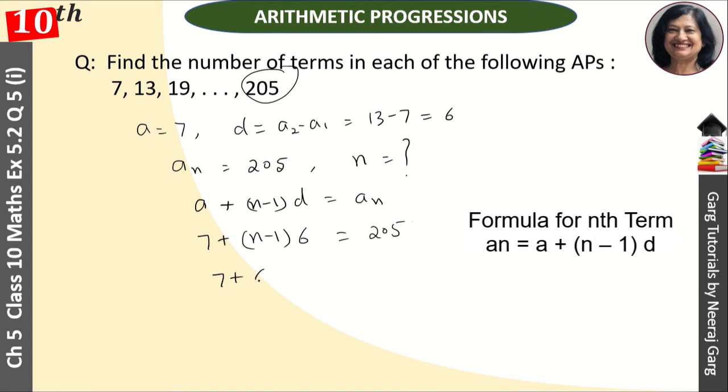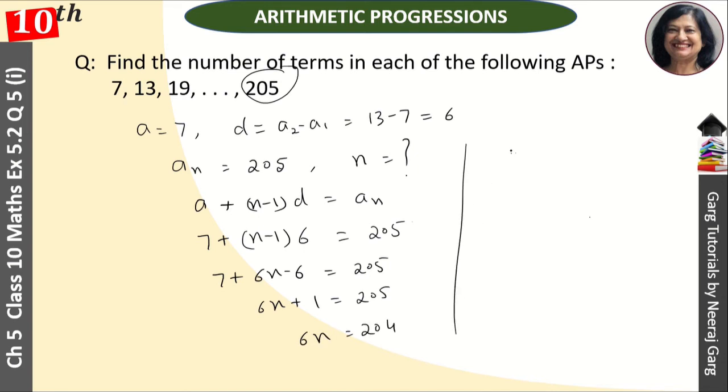So, 7 plus 6n minus 6 equals 205. Then 6n plus 1 equals 205. 6n is equal to 204.